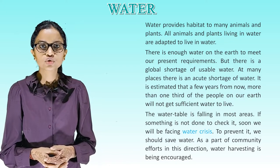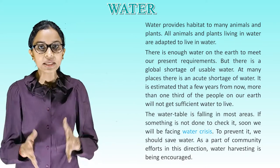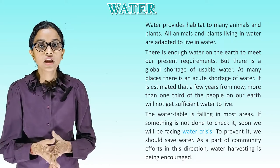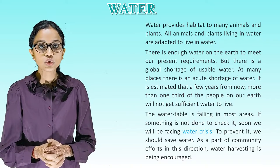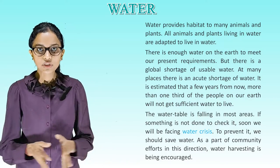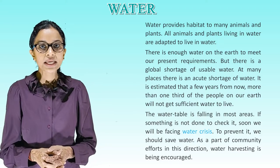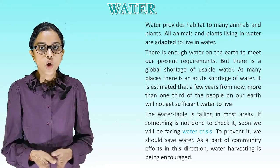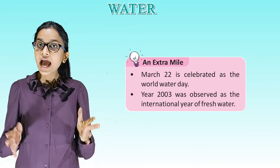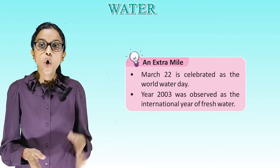There is enough water on the earth to meet our present requirements, but there is a global shortage of usable water. At many places there is an acute shortage of water. It is estimated that a few years from now, more than one third of the people on our earth will not get sufficient water to live. The water table is falling in most areas; if something is not done to check it, soon we will be facing a water crisis. To prevent it, we should save water as part of community efforts. Water harvesting is being encouraged. March 22 is celebrated as the World Water Day. Year 2003 was observed as the International Year of Fresh Water.